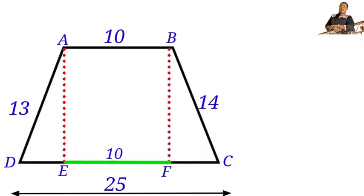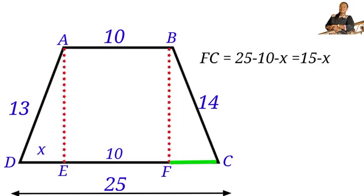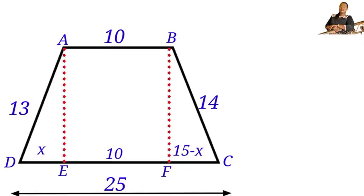EF is 10. Let us call line DE as x. FC will then be 25 minus 10 minus x, so FC equals 15 minus x. Let us call the height of the trapezium h. AE is h, and since AE equals BF, BF will also be h.